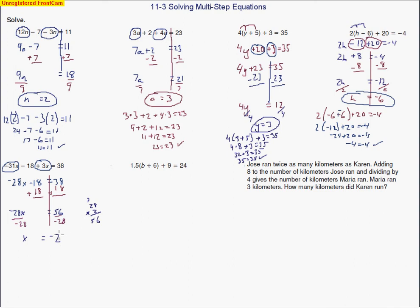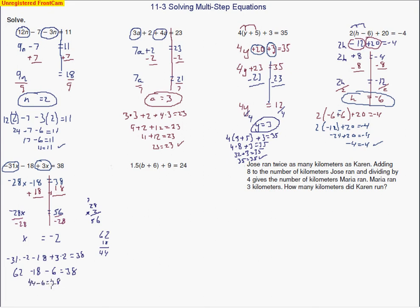Let's go ahead and substitute negative 2 back in: negative 31 times negative 2, minus 18, plus 3 times negative 2 equals 38. That makes positive 62 minus 18, and then minus 6 equals 38. So 62 minus 18 gives 44, and 44 minus 6 gives 38. Sure enough, 38 equals 38 — I know I have the right answer.